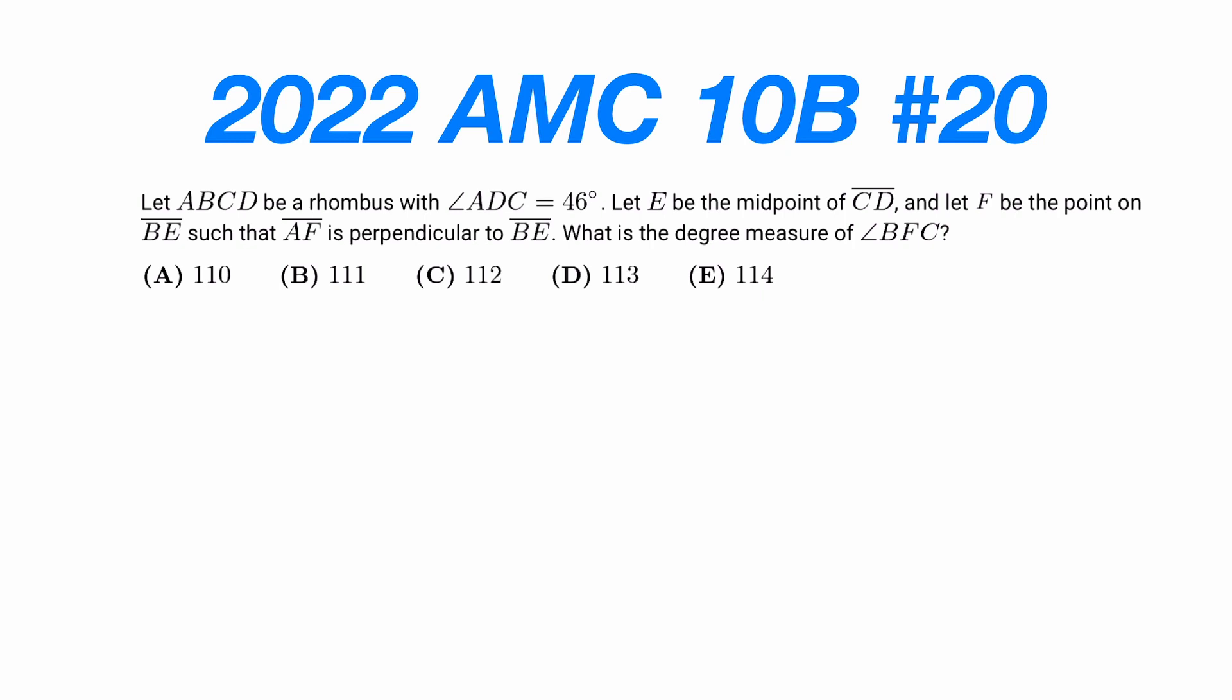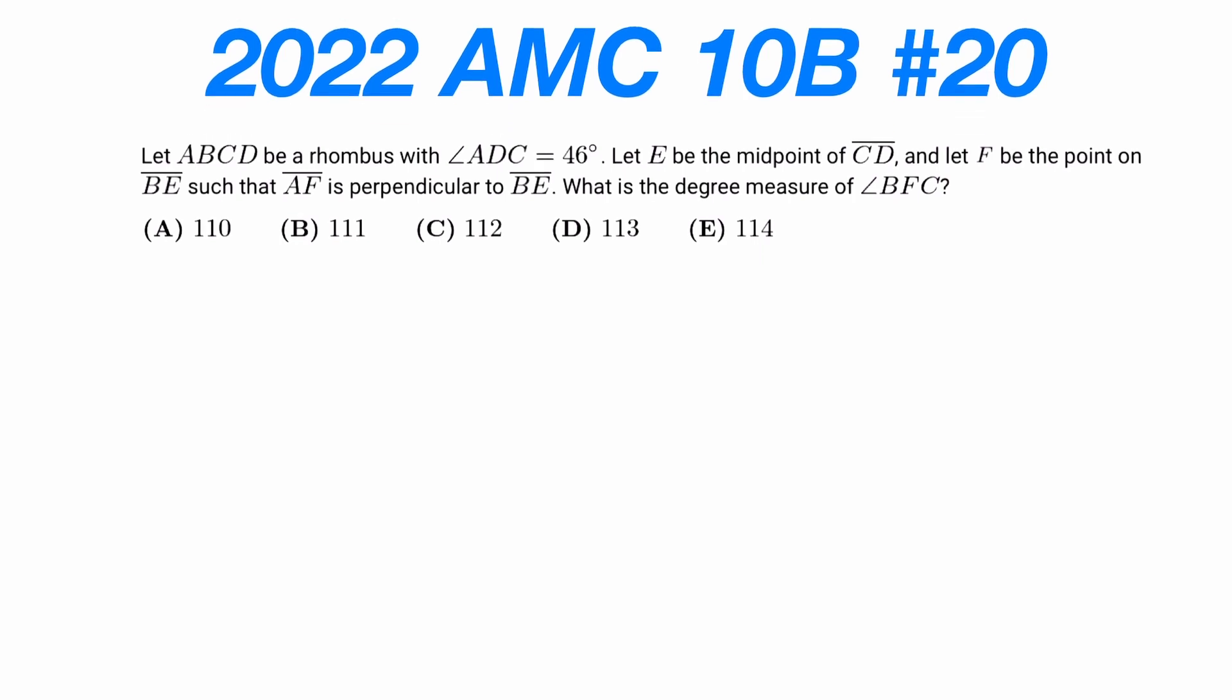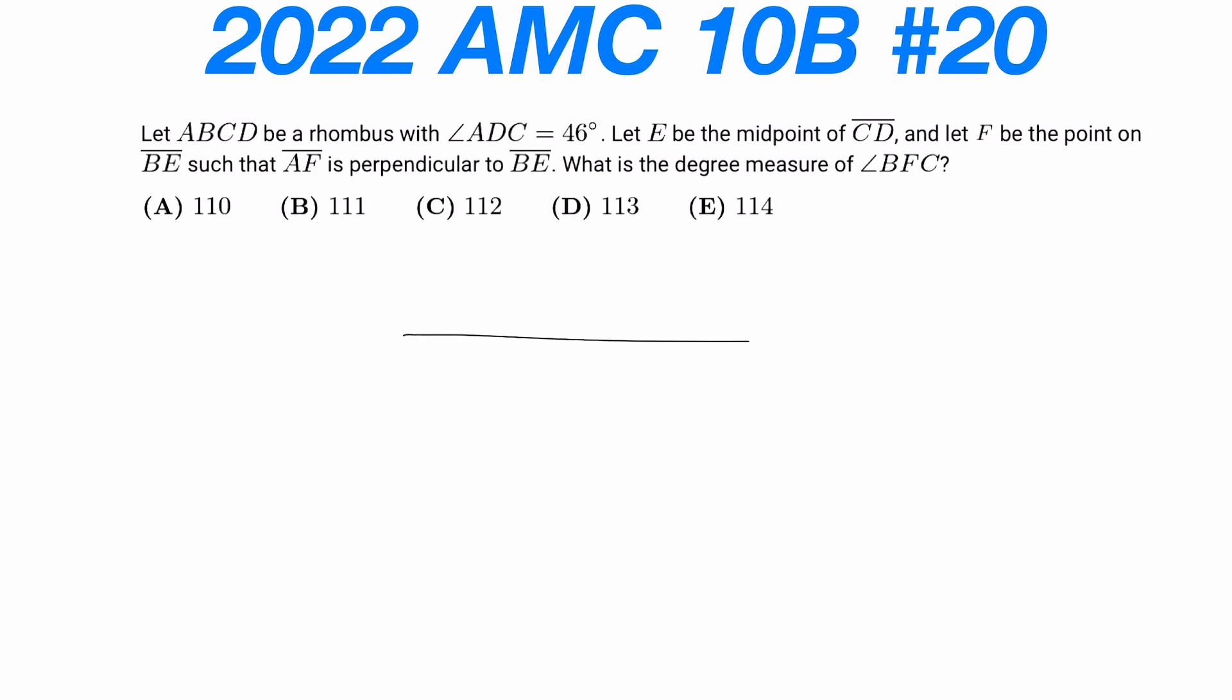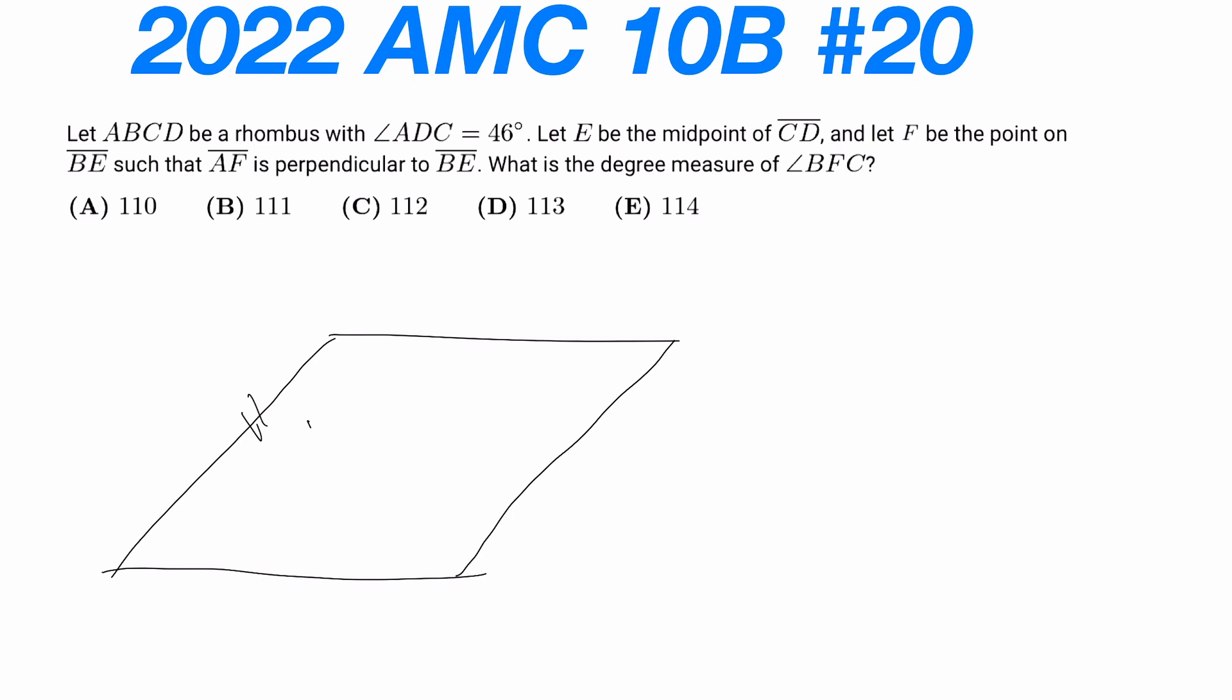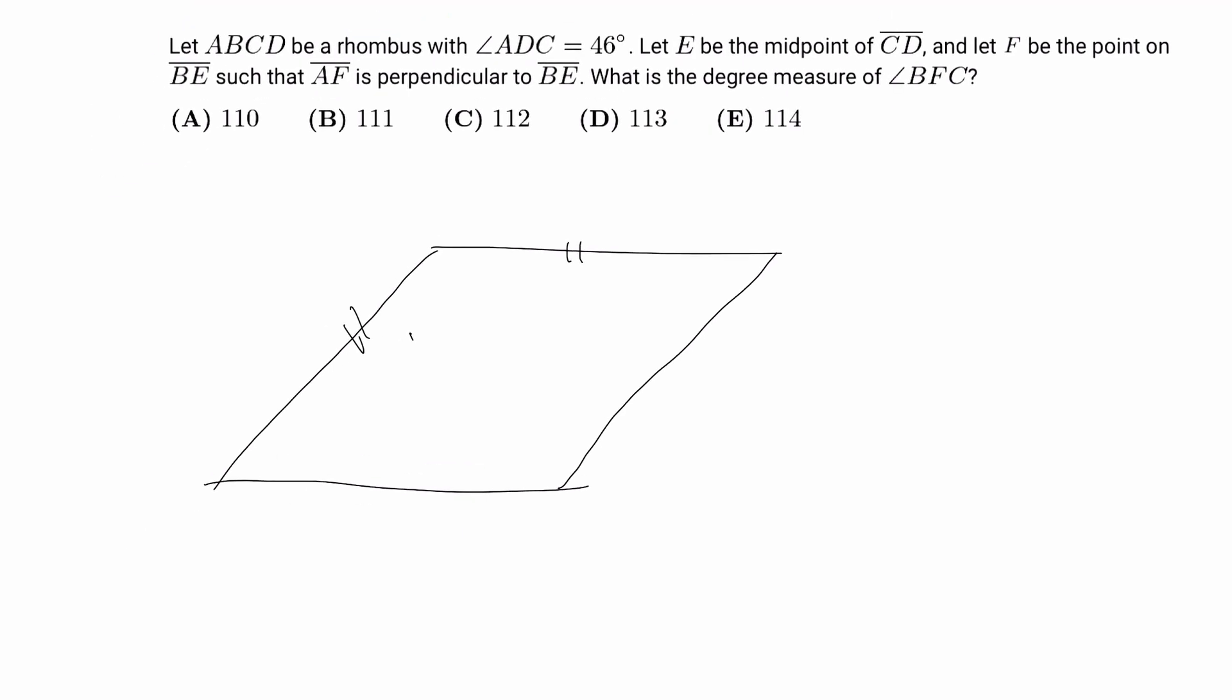So in this problem, it states that ABCD be a rhombus with angle ADC equals 46 degrees. Let E be the midpoint of CD. So let's just try to draw the diagram real quick. A rhombus, so I'll draw it like this, such that these two sides are the same. ABCD, ADC is an acute angle, so I'll label it like this. So this angle is 46 degrees, and it says let E be a midpoint of CD. So this is E.